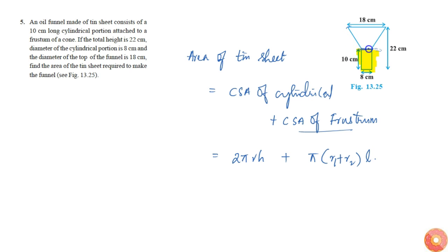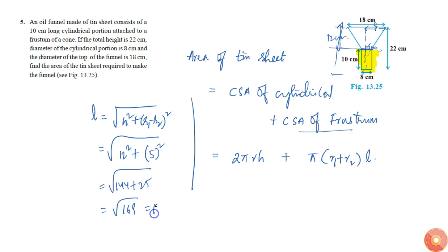The diameter here is 8 centimeters, so the radius is 4 centimeters. The slant height l is given by the square root of h² plus (r1 - r2)², which equals the square root of 144 plus 25, which is the square root of 169, which is simply equal to 13 centimeters.